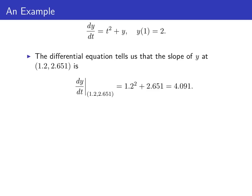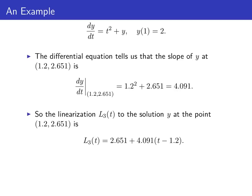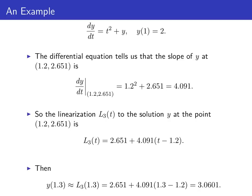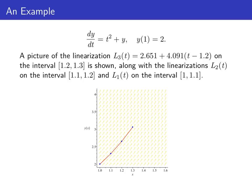As before, we find the slope of y at the point (1.2, 2.651) by substituting into our differential equation: 1.2 for t and 2.651 for y, giving a slope of 4.091. That makes the linearization L₃(t) = 2.651 + 4.091 × (t − 1.2). So we can approximate y(1.3) with L₃(1.3), which comes out to be 3.0601. Appending L₃ to the previous linearizations, we can see these tangent lines really do follow the slope field, giving us a good idea of what the graph of the solution y looks like.